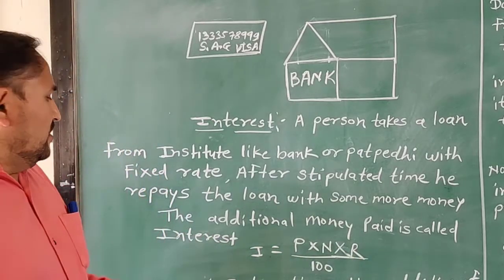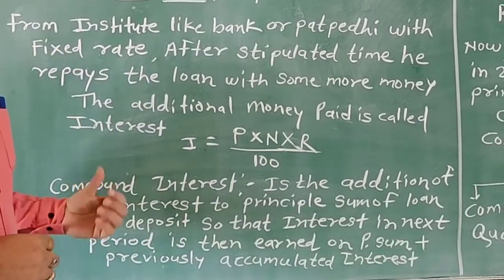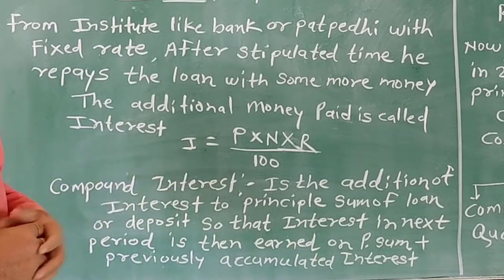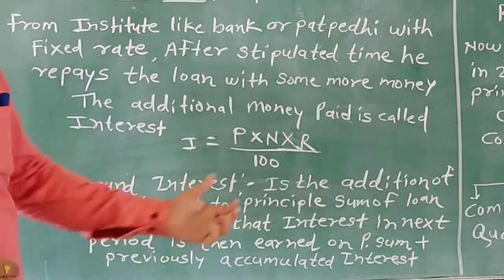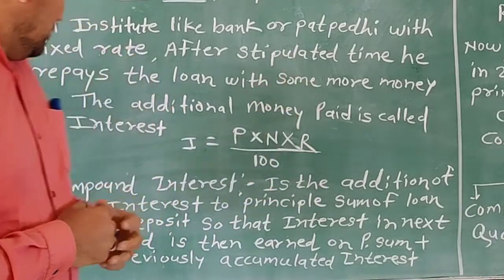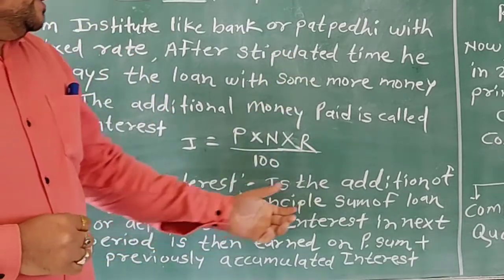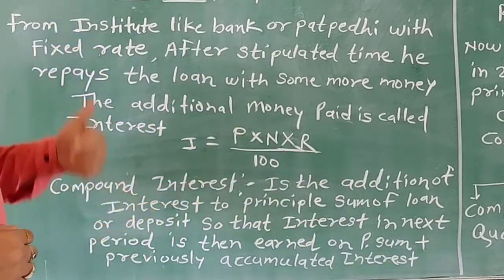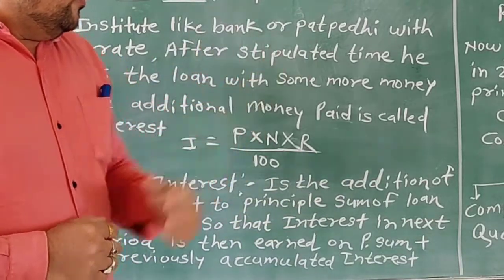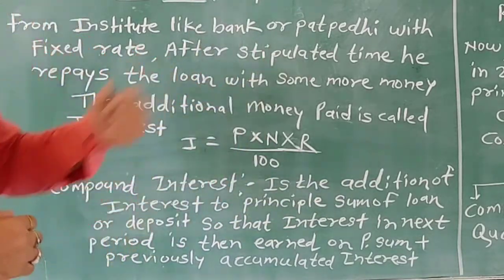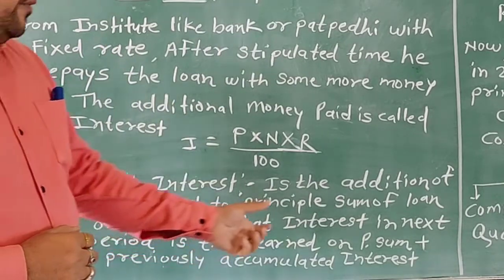In this year we studied compound interest. What is compound interest? It is the addition of interest to the principal sum or deposit, so that the interest in the next year is earned on the principal sum plus the previously accumulated interest.